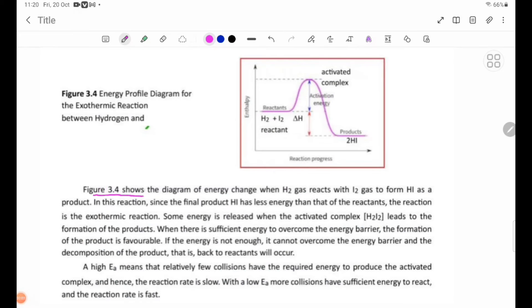Figure 3.4 shows the diagram of energy change when H2 gas reacts with I2 gas to form HI as a product. Since the final product HI has less energy than that of the reactants, the reaction is the exothermic reaction.